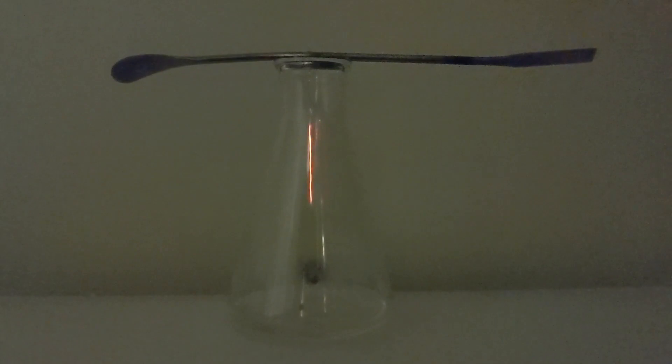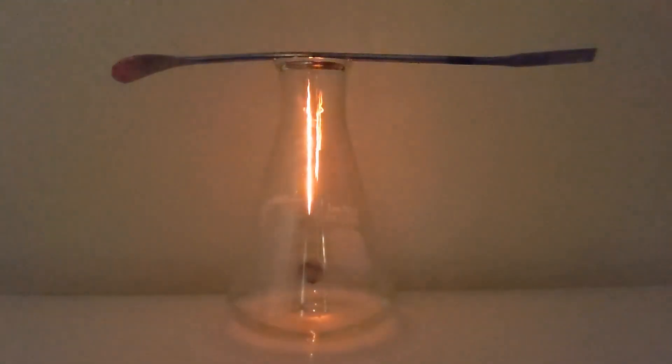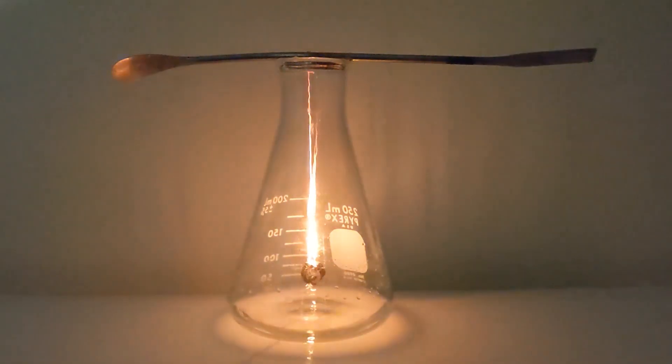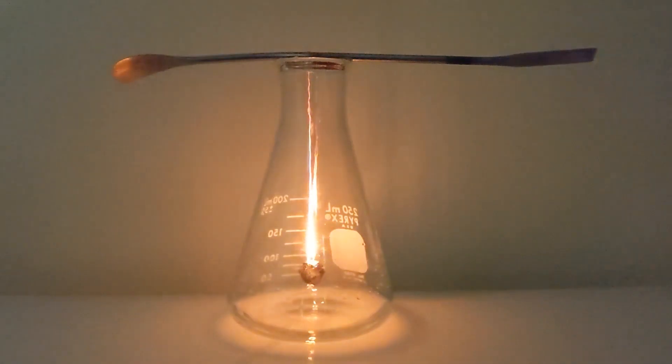Platinum is a really well-known catalyst. It speeds up a lot of different chemical reactions. In this case, it's speeding up two chemical reactions. The first one is the decomposition of the alcohol vapors into an aldehyde and hydrogen gas. Now, that's an endothermic reaction, so that's actually cooling the platinum down. So, that's not what's causing this glow here.